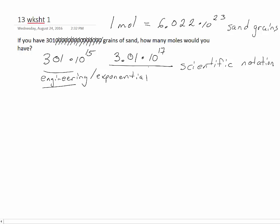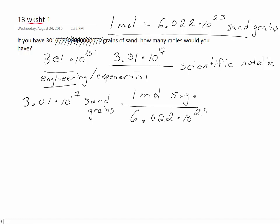So I'm going to work from this as though it's in scientific notation and say 3.01 times 10 to the 17th sand grains times, we have our equality here for the mole, times 1 mole of sand grains over 6.022 times 10 to the 23rd.